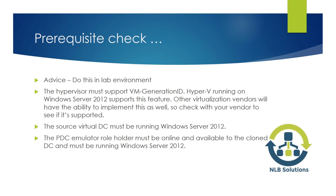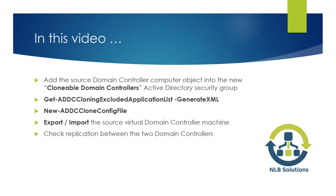The cloning process will work, but there are a few things you need to check beforehand. One of those things is that your hypervisor must support VM Generation ID. Hyper-V running on Windows Server 2012 and 2012 R2 supports this feature; other virtualization vendors may have this ability but you need to check. Also, the source virtual DC must be running 2012 or 2012 R2, and the PDC emulator role holder must be online and available, also running 2012 R2.